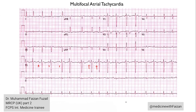You should be able to recognize MAT based on the variable p-wave morphology. Remember, you need to see at least three different p-wave morphologies to diagnose either wandering atrial pacemaker or multifocal atrial tachycardia. That's it for today — see you in the next lesson on atrial flutter and atrial fibrillation.